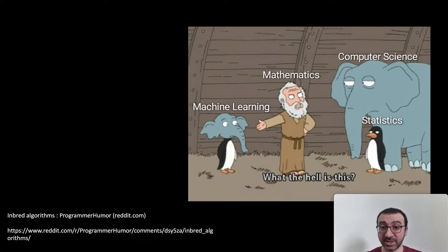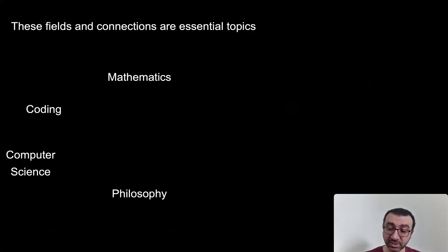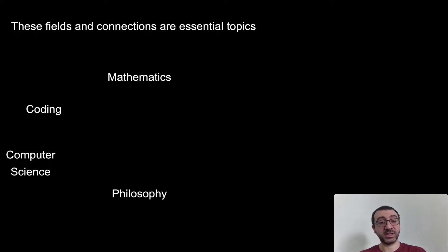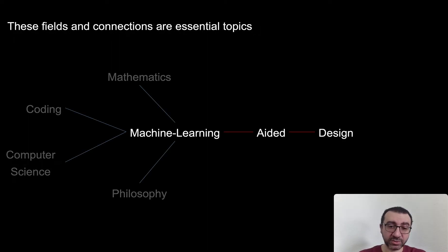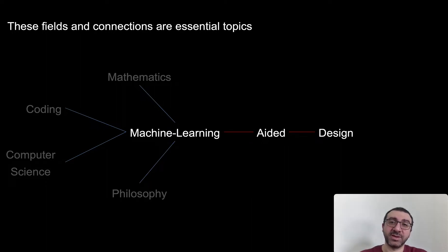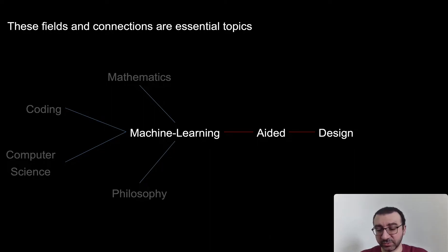You need to get enough information and knowledge about what's happening underneath this technology. The scientific fields shown in this slide are all important and crucial — you should know a lot about them before going into machine learning. But in this course I will focus on the applicative perspective of how to integrate design with machine learning algorithms.